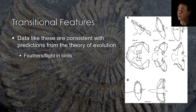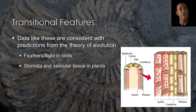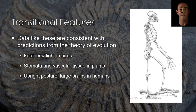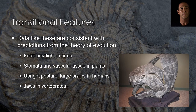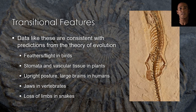Similar sequences of transitional features document changes that led to the evolution of feathers and flight in birds, stomata and vascular tissue in plants, upright posture, flattened faces, and large brains in humans, jaws in vertebrates, the loss of limbs in snakes, and other traits.